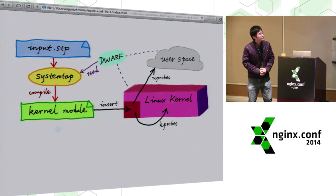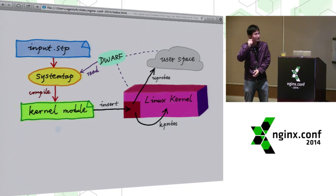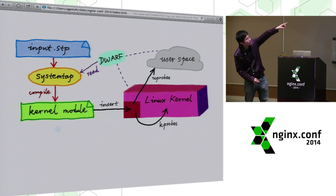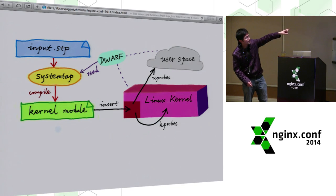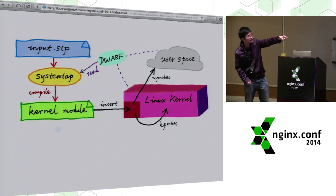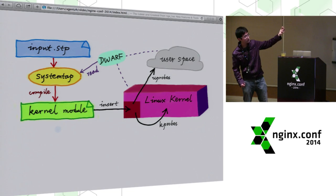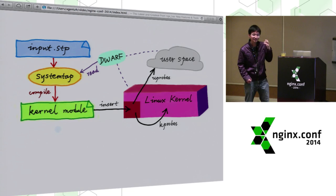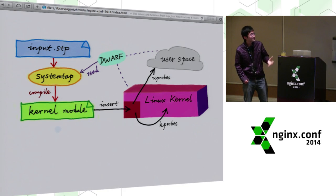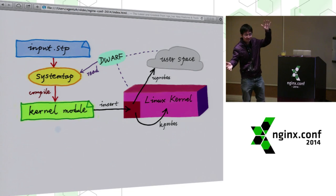This is how Systemtap works — it's a very mature dynamic tracing tool for the Linux world. Basically we write tools in the scripting language named STP, then feed it to the Systemtap front end command-line utility named STAP. It compiles the script down to a kernel module and then inserts it into the kernel on the fly. When the tool exits, it removes the module without polluting the kernel. Because this tool runs in the kernel, it knows everything. It can inspect the user space, it can inspect the kernel space, and it can combine information from both worlds in a single state machine.